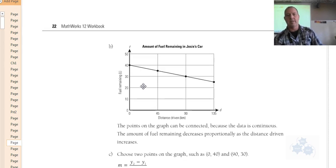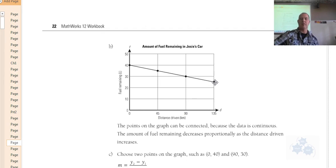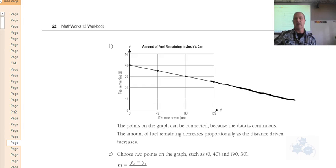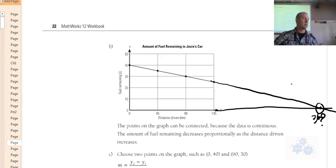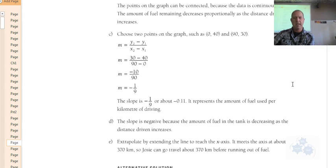The graph shows this: she starts at zero kilometers with 40 liters, at 45 kilometers she has 35, at 90 kilometers she has 30, and so on going down. The line would continue all the way to 360 kilometers where it reaches zero liters. I don't have enough room on the page to draw it fully, but that's what we just calculated.